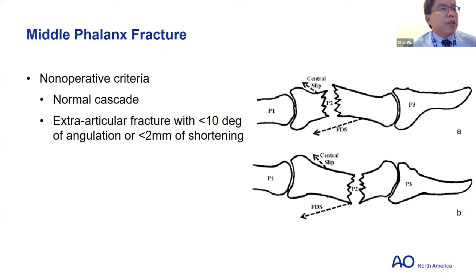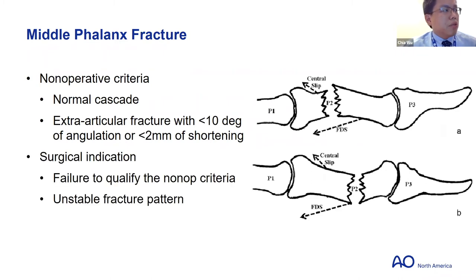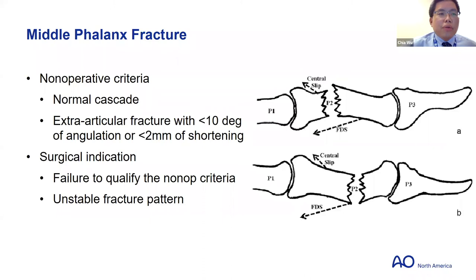For non-operative criteria, always check for normal cascade to ensure no malrotation, and check for significant angulation or shortening — these can cause imbalance of flexor and extensor forces leading to contractures and secondary deformities. Surgical indication is any unstable fracture pattern or failure of the non-operative criteria. Recovery of motion is associated with age: young patients in the first two decades can often regain up to 80% of motion, whereas patients in their sixth or seventh decades may regain only 60% or less.